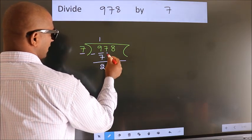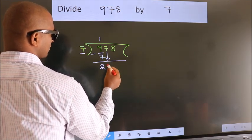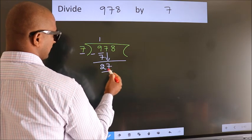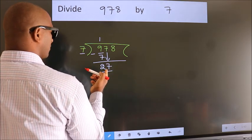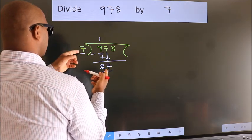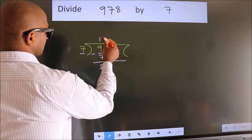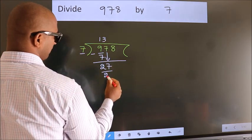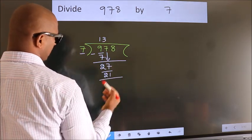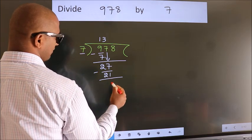After this, bring down the beside number. So 7 down. So 27. A number close to 27 in 7 table is 7 3s 21. Now we subtract. We get 6.